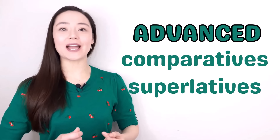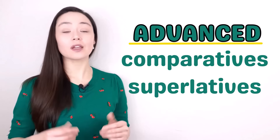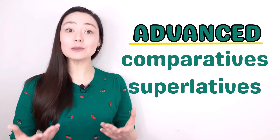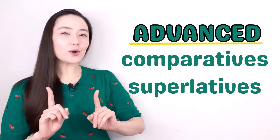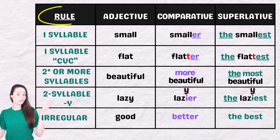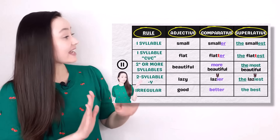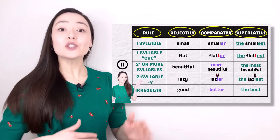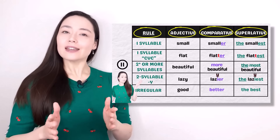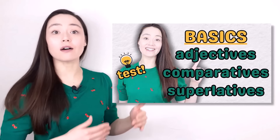In today's lesson we're going to look at some advanced grammar with comparatives and superlatives. How do you feel about comparative and superlative adjectives? Let's do a quick check. I'm going to show you a chart with a list of rules — adjectives, comparatives, and superlatives. Pause the video if you need time to look at everything. If everything looks clear, continue with this lesson. If you're not sure, I suggest you watch my first video on this topic.